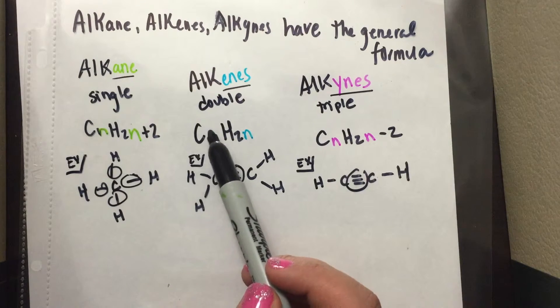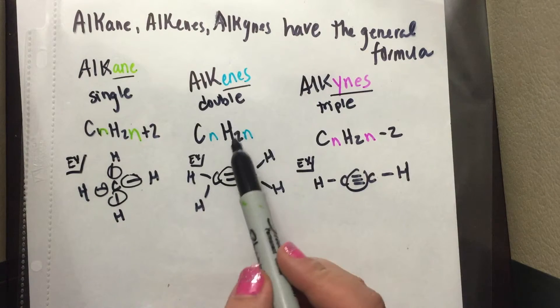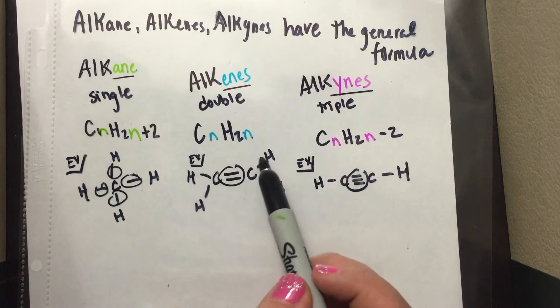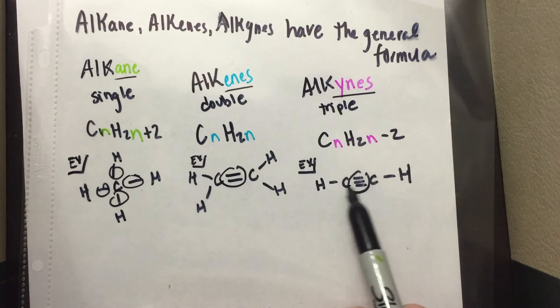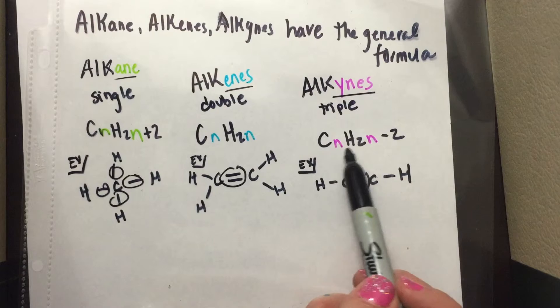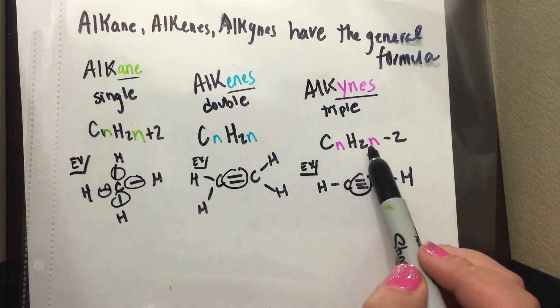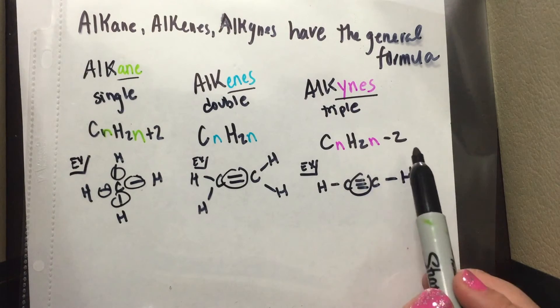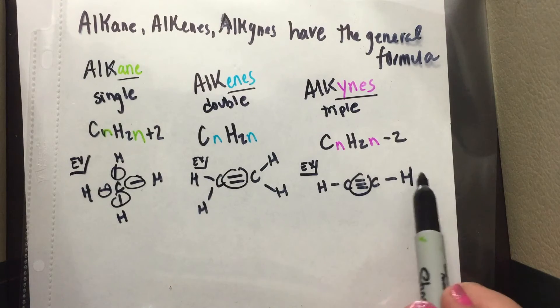And for the alkenes, you would do the same thing, 2 hydrogens. 2 times 2 is 4, so 4 hydrogens, and just 2 carbons. So 2 times 2 is 4 minus 2, which is 2. So there you can see there would only be 2 hydrogens.